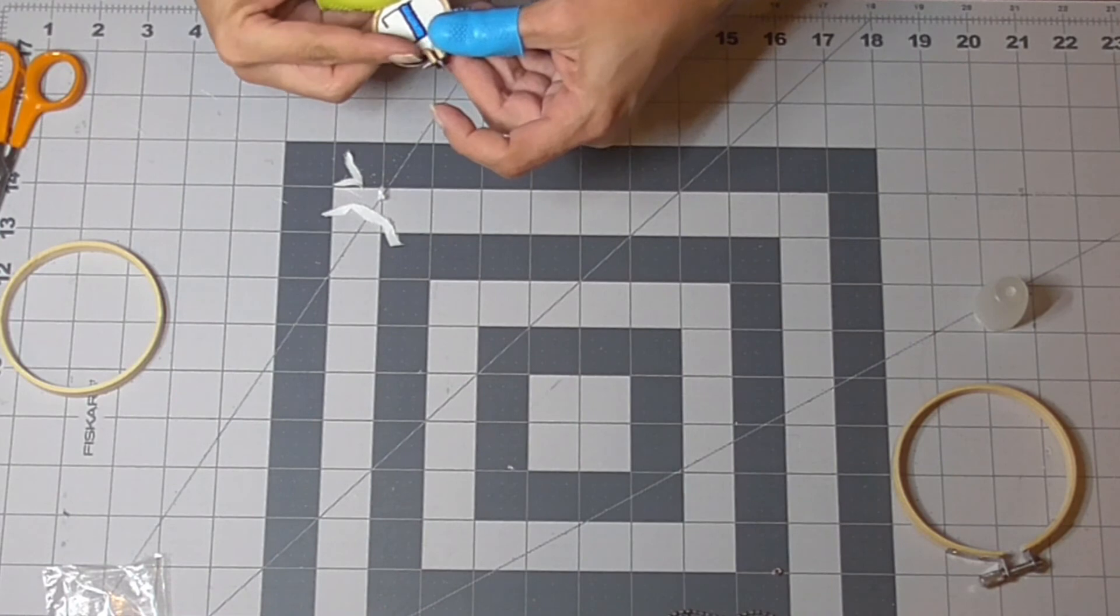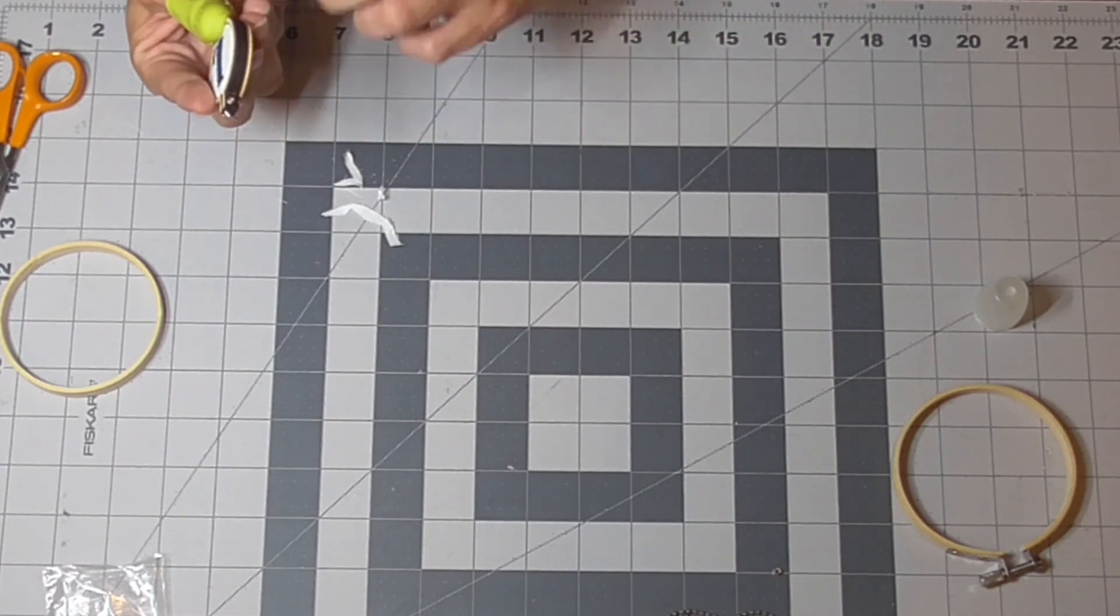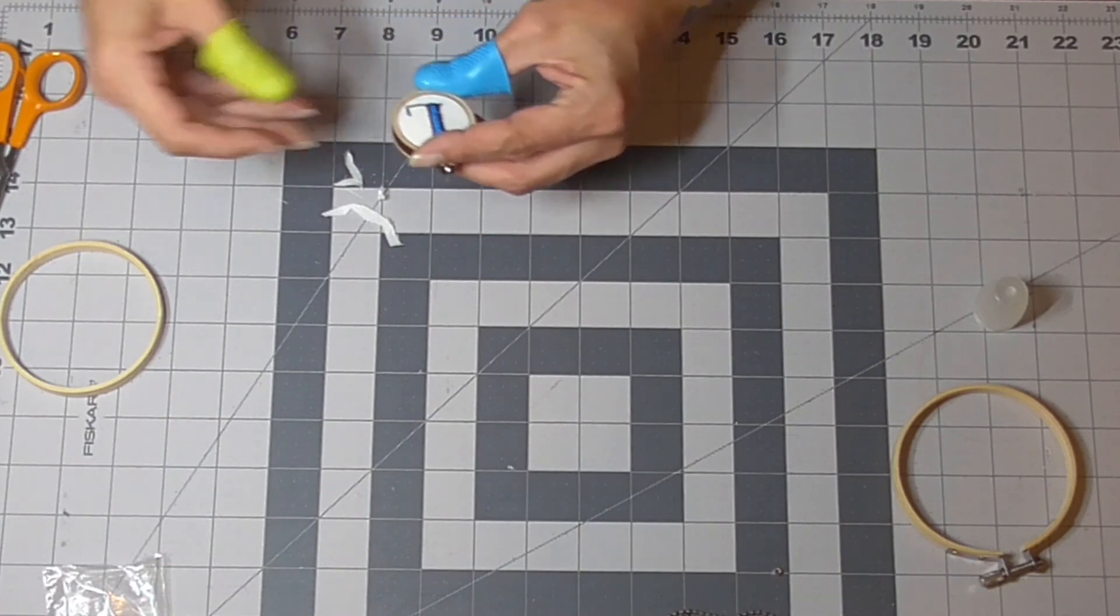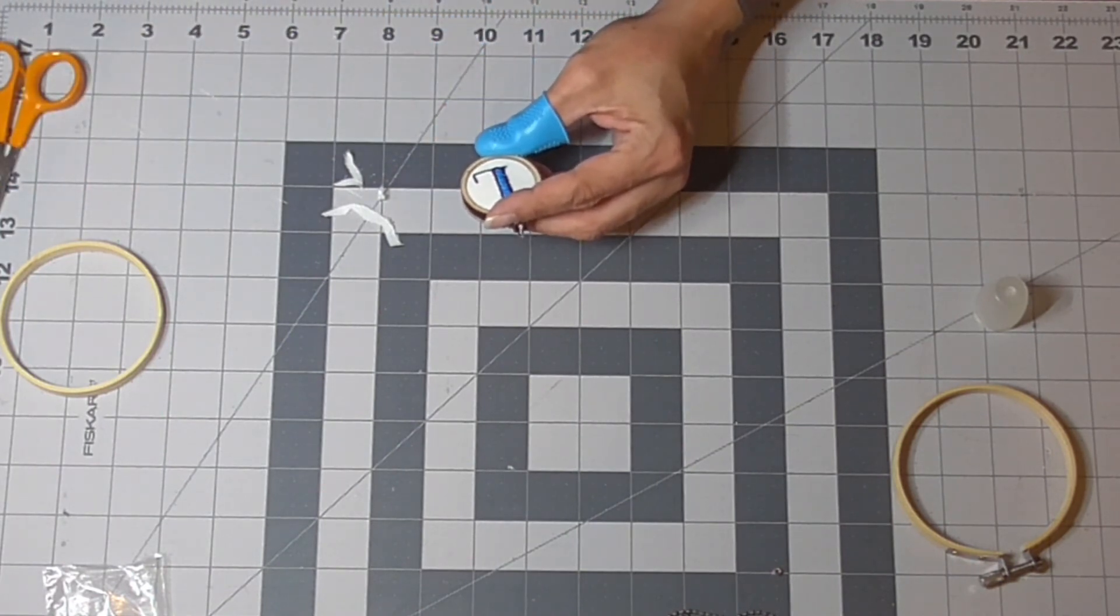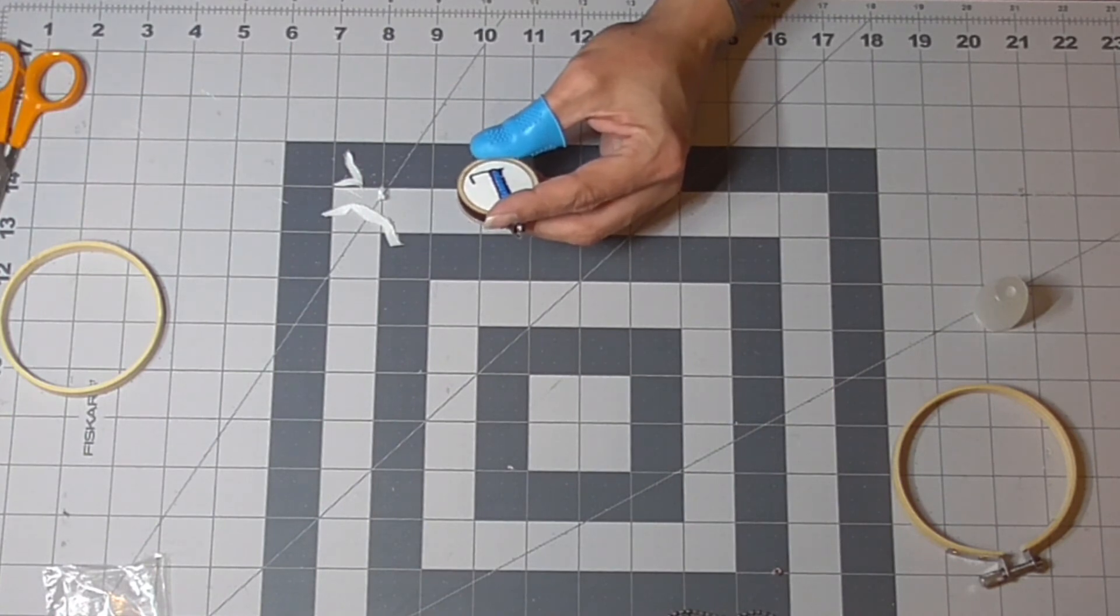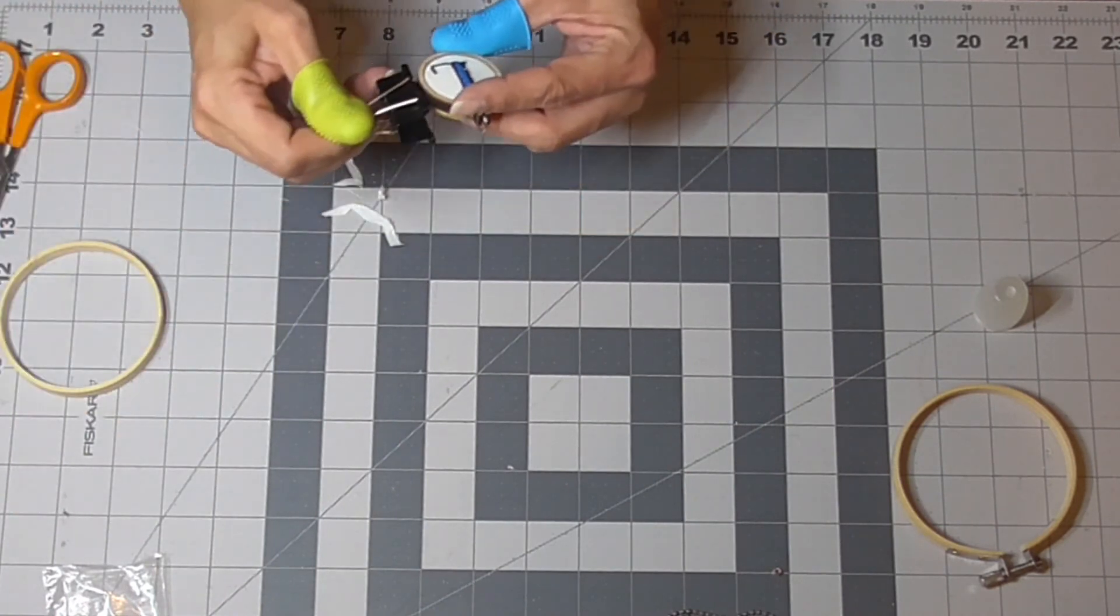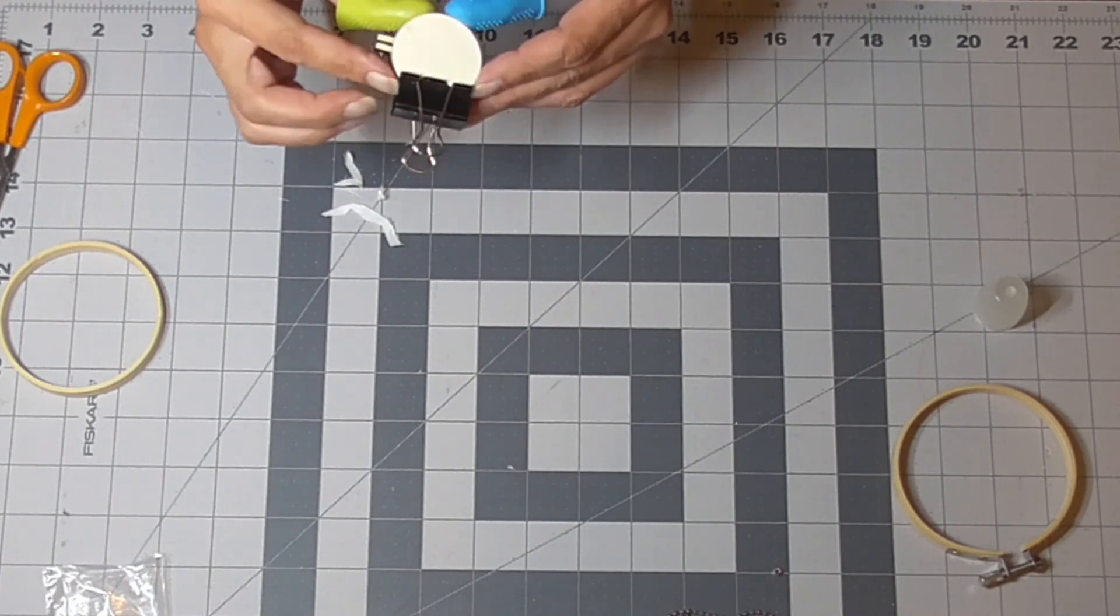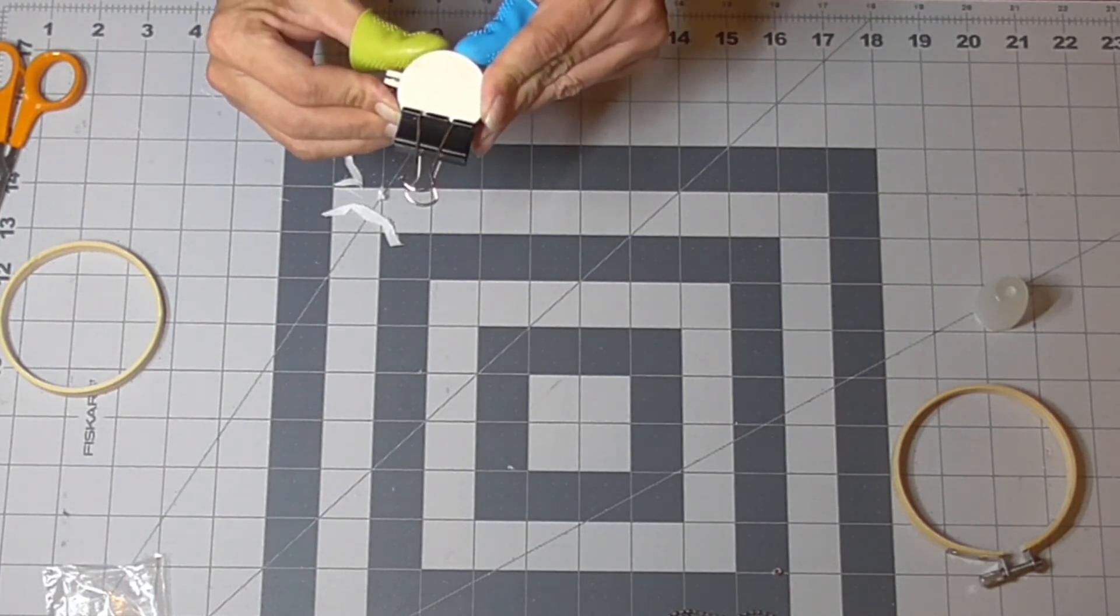Again, you can use a little clamp or two to hold it all together. Or you can throw the clamp across the room, whatever. Make sure it's all lined up on the back.